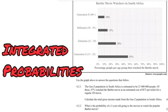The second way you will find a probability question is as an integrated question. For example, Question 4 dealt with movie tickets — it had finance elements but then developed into a probability question, such as 4.2.2: 'What is the probability of a two-year-old going to the movies to watch the popular Barbie movie?' Be comfortable with probability both as a standalone and as an integrated question. That concludes the four topics for your May/June Paper 1 examination, which can be integrated to give you a total of five questions.